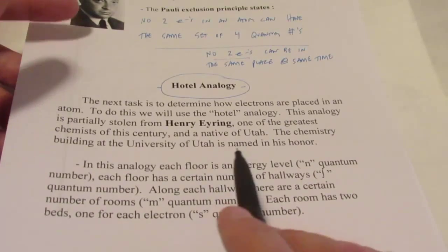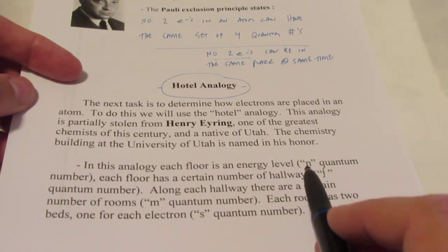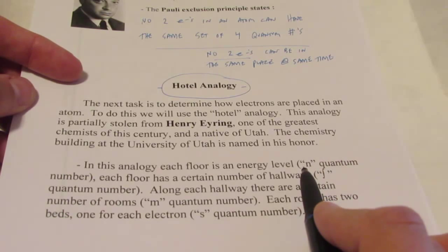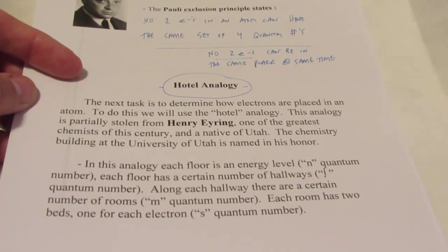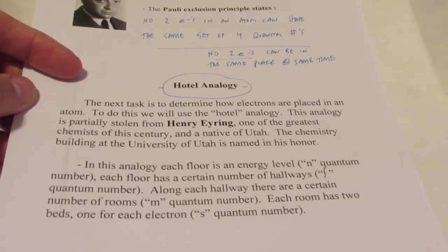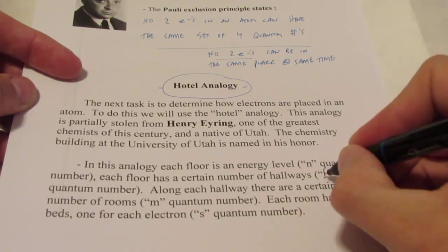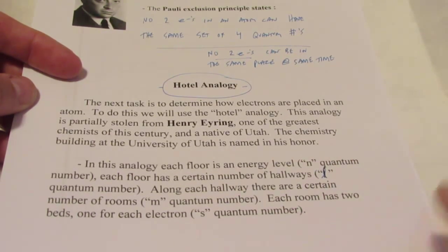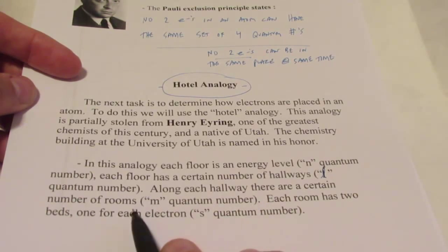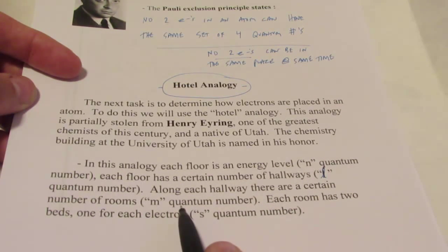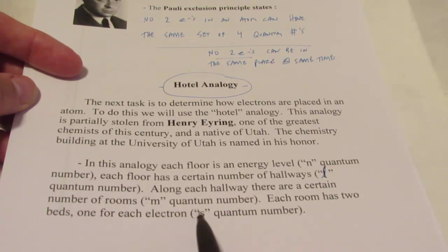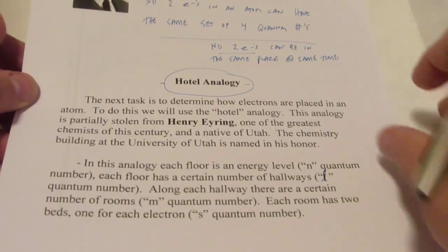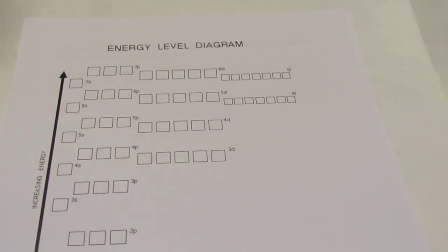In this analogy, each floor of the hotel is an energy level, expressed by the N quantum number. Each floor has a certain number of hallways, representing the sublevel or the L quantum number. Along each hallway there are a certain number of rooms, which is the M quantum number or the orbitals. And each room has two beds, one for each electron — the S quantum number, positive and negative one-half.